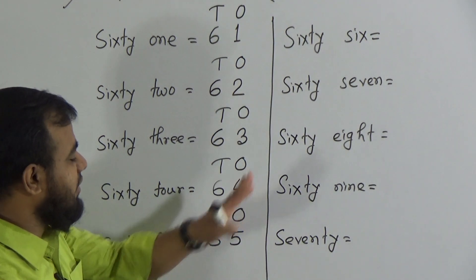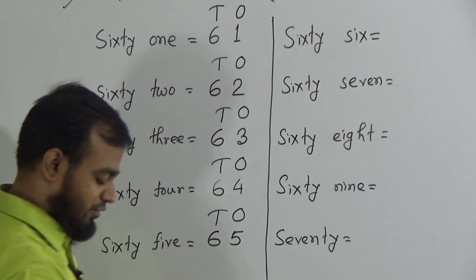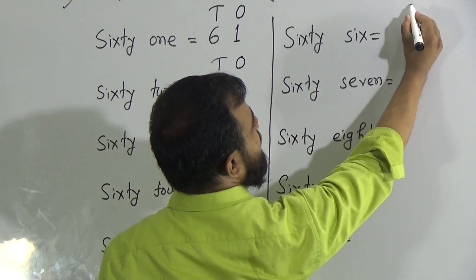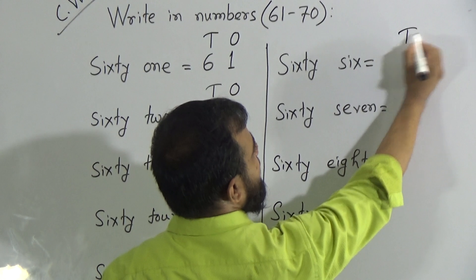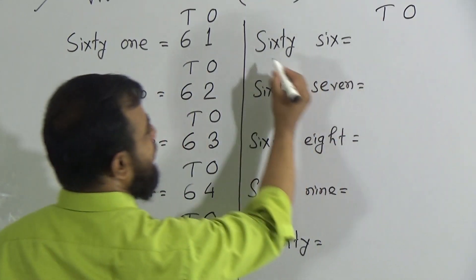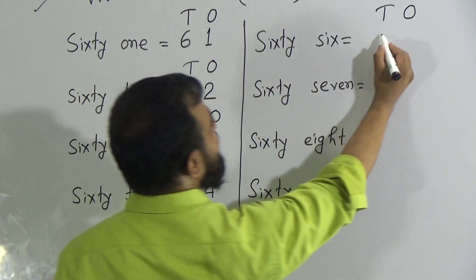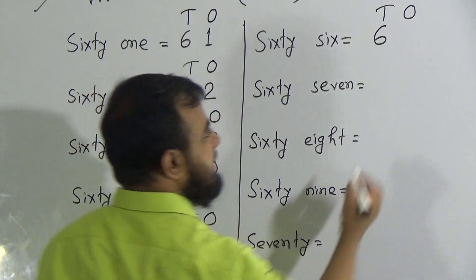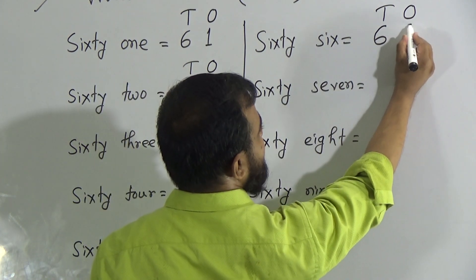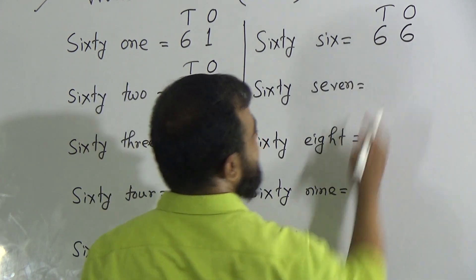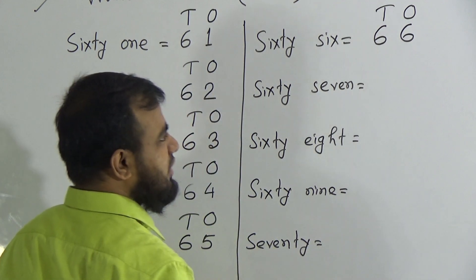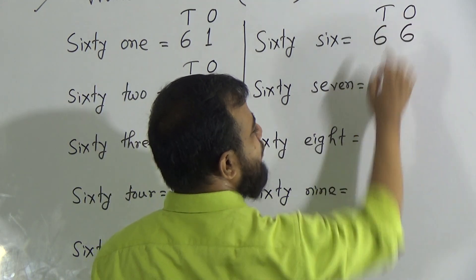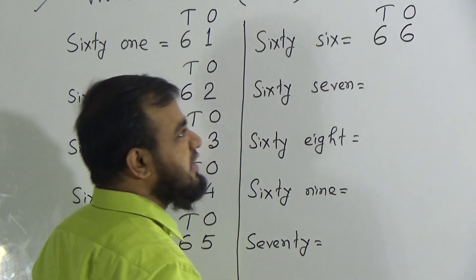Our next number, written in the right column, is 66. To write down 66, first indicate the place value. To write 60, we write 6 in the tens place. To write 6, we write 6 in the ones place. It makes 66. Six and six makes the number 66, or you can say six tens and six ones makes the number 66.